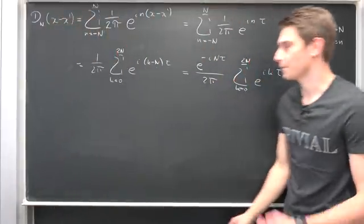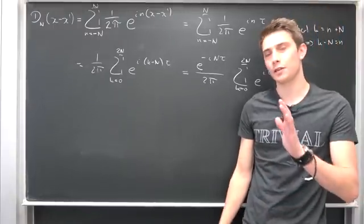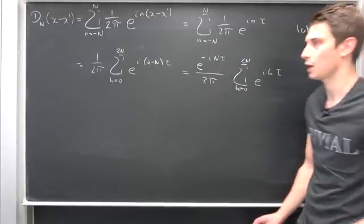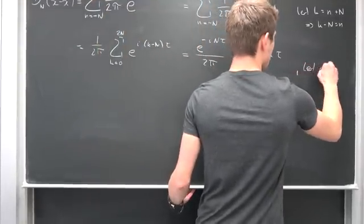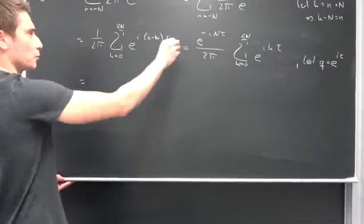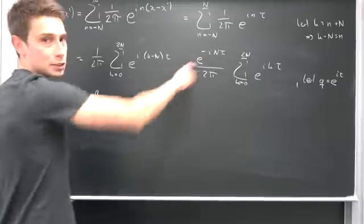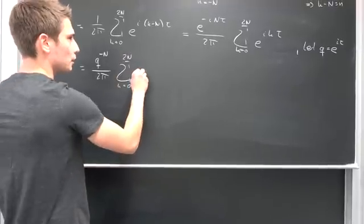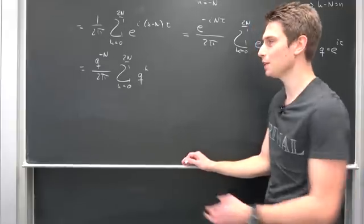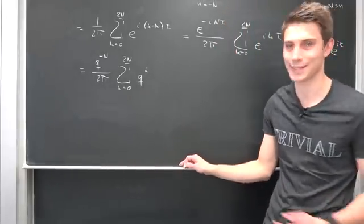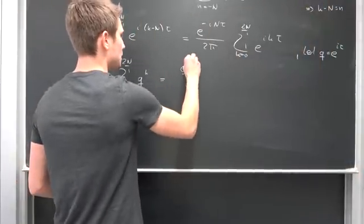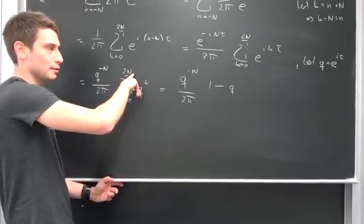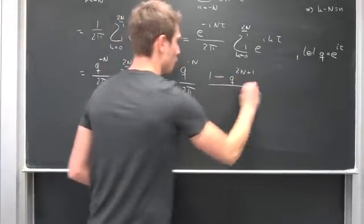To make things clearer, let Q equal e to the i times tau. Then we end up with Q to the negative N over 2π, times the sum from k equals 0 to 2N of Q to the k. This is our well-known geometric series, which is quite good. So applying the geometric series formula, we get Q to the negative N over 2π, times (1 minus Q to the 2N plus 1) over (1 minus Q).